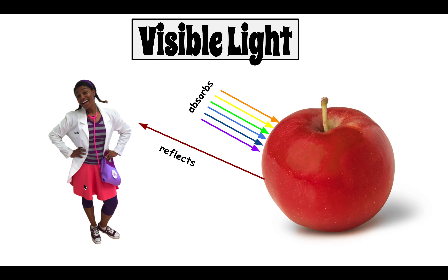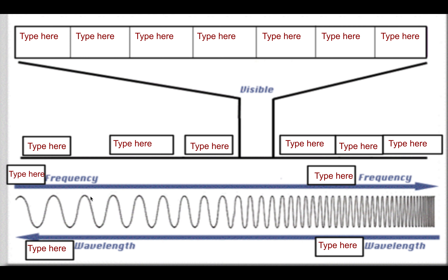My skirt is actually absorbing all of the colors except pink, and the pink is reflected back at your eyes so you perceive the skirt as pink. This will be your homework slide where you'll have to fill in the order of the electromagnetic spectrum, the visible light spectrum, where high and low frequency is, and where longer and shorter wavelengths are. Before you do that, pick a video to watch — either the BrainPop video or the light and color video — and then you'll be able to finish the electromagnetic slide for homework.